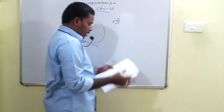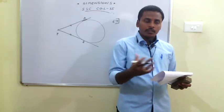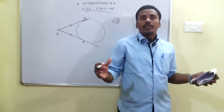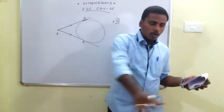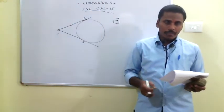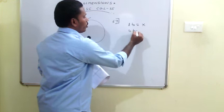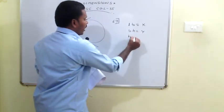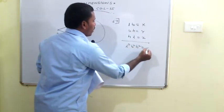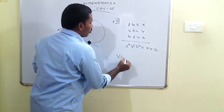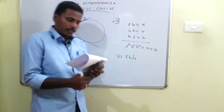The 67th problem: the areas of three adjacent faces of a cuboid are X, Y, Z respectively. Let the dimensions be L, B, H. Then LB = X, BH = Y, HL = Z. Multiplying: L²B²H² = XYZ, so LBH = √(XYZ). The volume of the cuboid is √(XYZ).